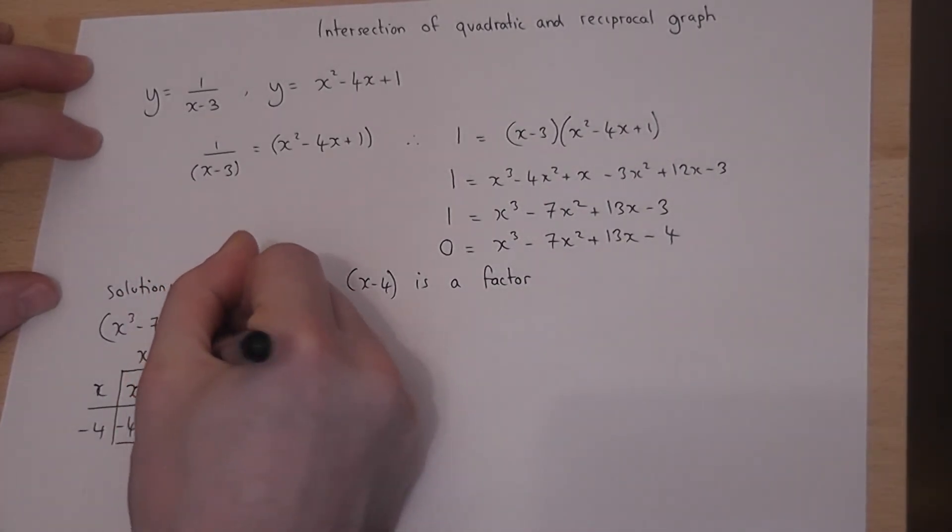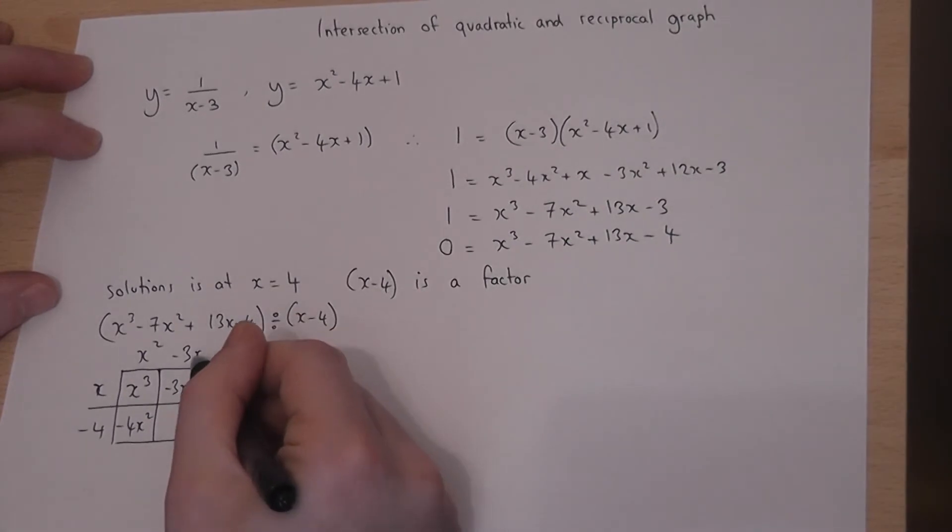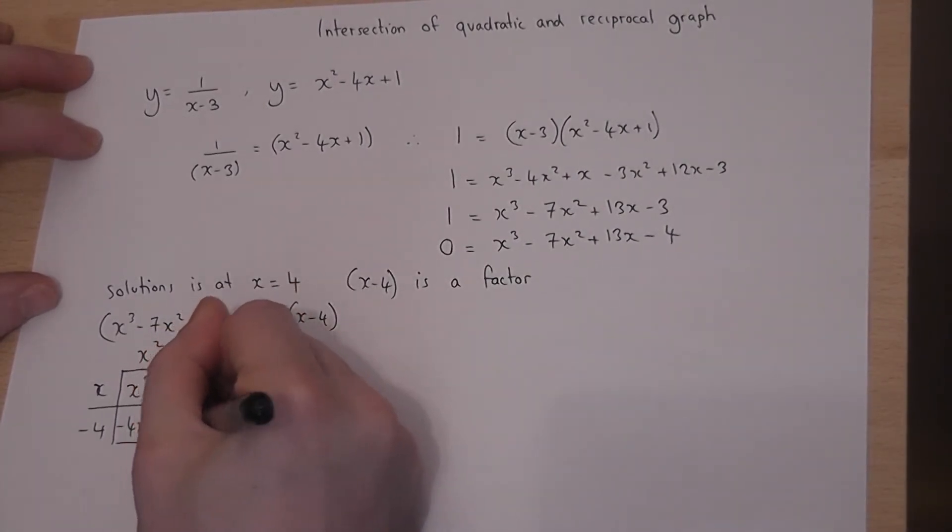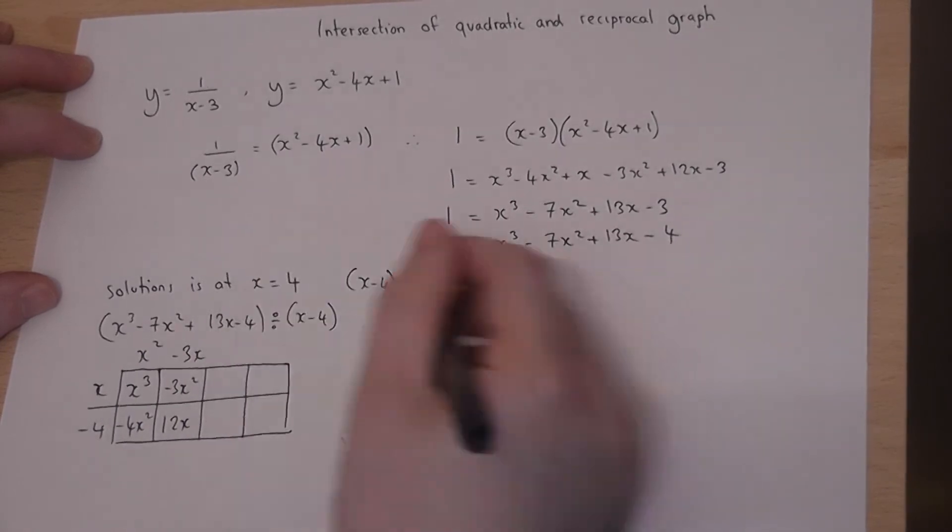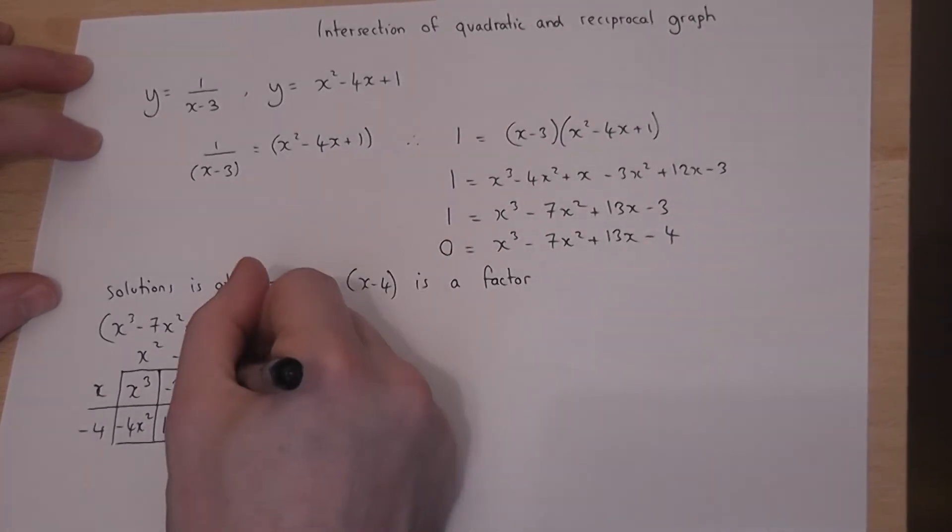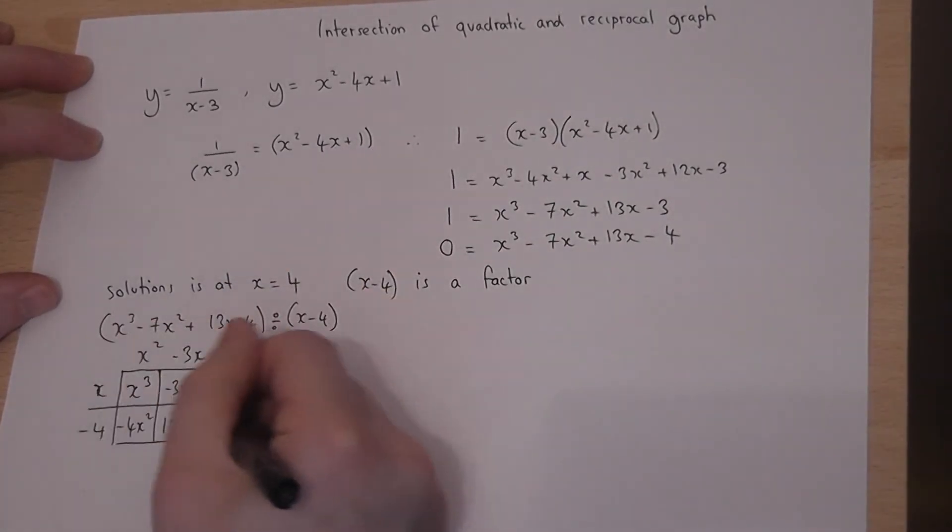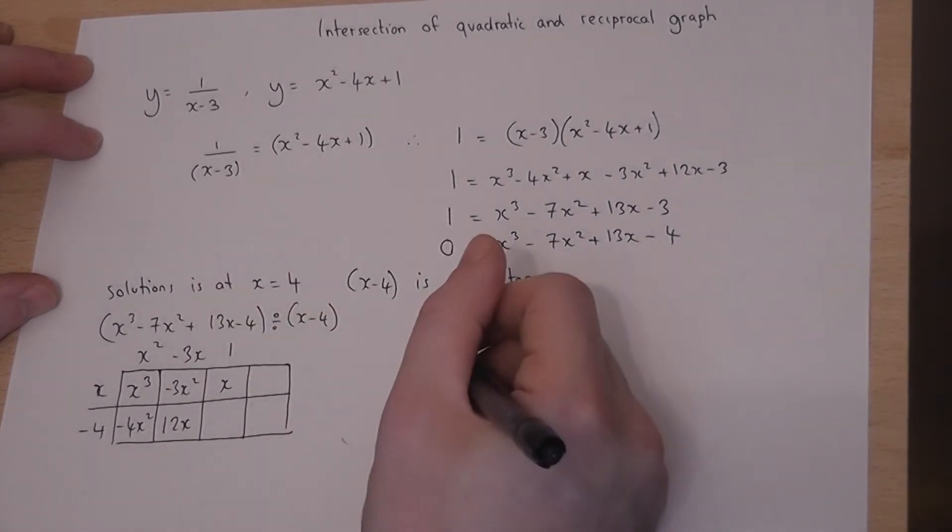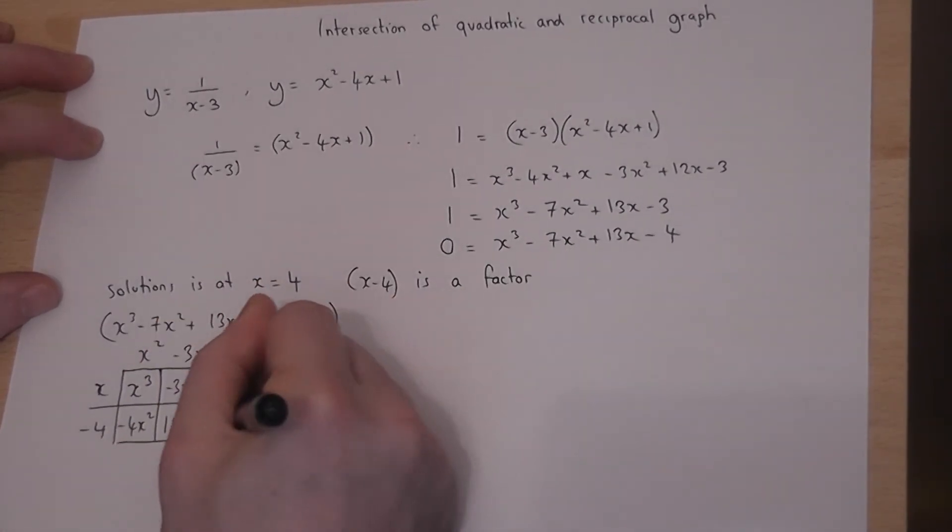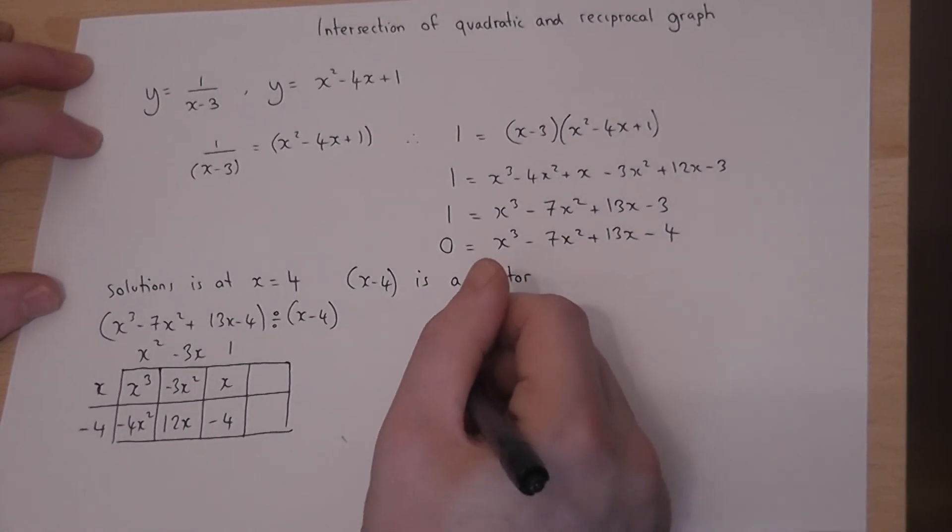Now minus 3x times minus 4 is plus 12x. I need a 13x. I need one more x. And x times what is x? Well, x times 1. And to check this, 1 times minus 4 is indeed minus 4 as required. So therefore,